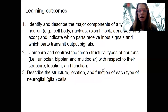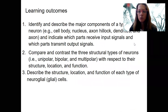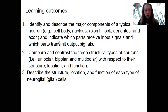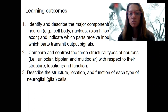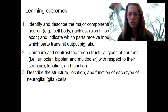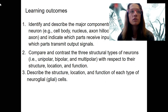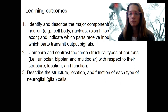To summarize what we've done here: we identified and described the major components of a typical neuron — which components to draw, which part receives input signals (dendrites), and which part transmits (the axon). We compared and contrasted three structural types of neurons with respect to structure, location, and function — sensory, motor, and special sensory. And we described the structure, location, and function of each type of neuroglial cell in both the peripheral nervous system and the central nervous system.